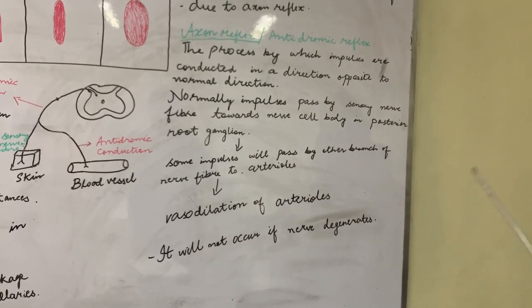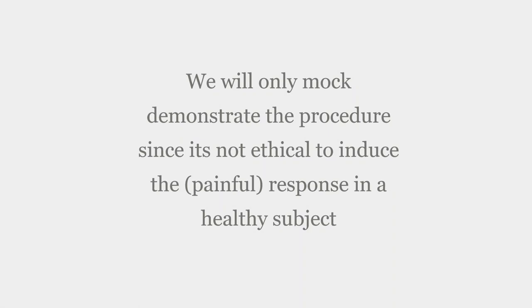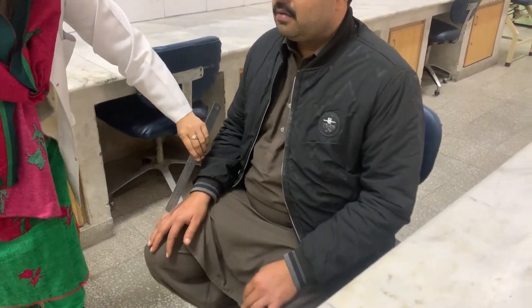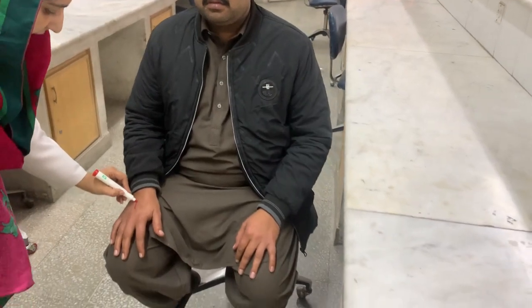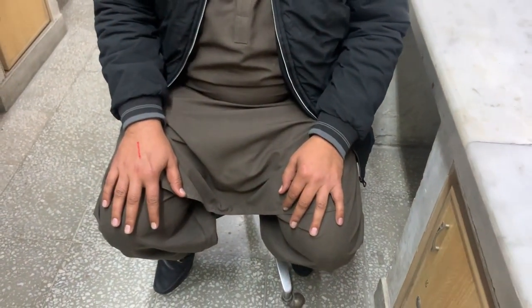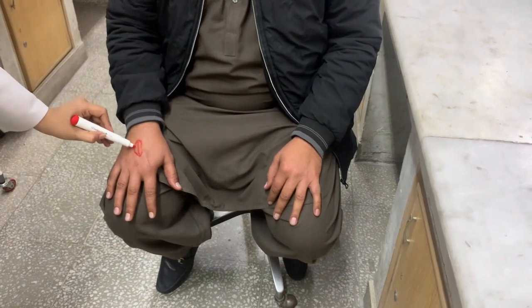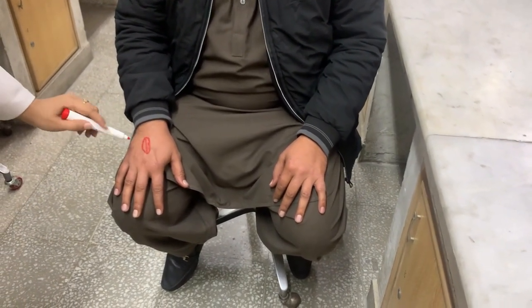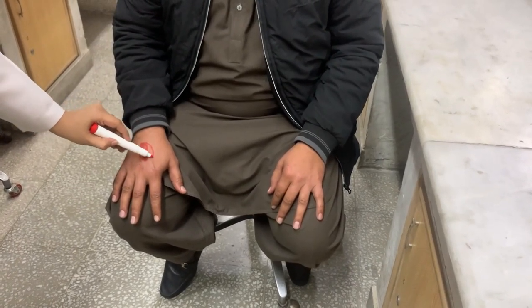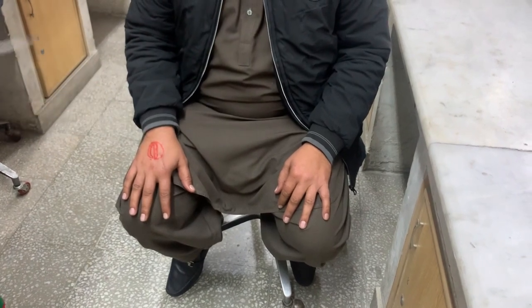Now I will show you the performance of this practical. We need a subject and a sharp or blunt object. I will not perform this practical on the subject because it would hurt him, so I will only show you the performance — I will place a sharp object on his hand but will not apply it to the skin. It will appear as a red line, called the red reaction. This leads to the second response, which is localized swelling or edema, called the wheal. Then it will spread to the surrounding area — the spreading swelling is called the flare, which is due to the axon reflex.